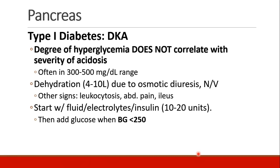We treat these patients with fluid resuscitation, correcting electrolytes, and administering insulin — usually about 10 to 20 units are necessary. When the blood glucose drops below 250, we start to add glucose as well in order to avoid hypoglycemia.